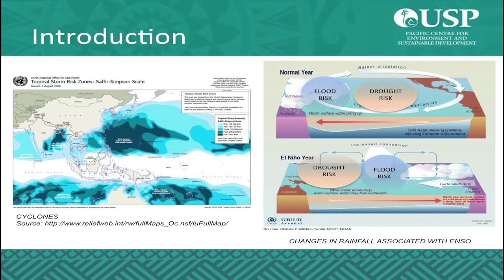For example, during normal or La Nina years, the flood risk is located in the west Pacific, while the drought risk is more in the central Pacific, as you can see on the map on the right hand side. On the contrary, during El Nino years, the drought risk is in the western Pacific, while the flood risk is in the central Pacific.